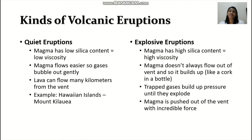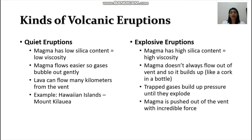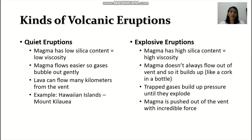There are two basic types of volcanic eruptions: quiet eruptions and explosive eruptions. In quiet eruptions, the magma has low silica content, low viscosity, and the magma flows easier so gases bubble out gently. For explosive eruptions, the magma has high silica content and high viscosity; the magma doesn't flow out of the vent so it builds up — it's like a cork in a bottle which suddenly explodes.